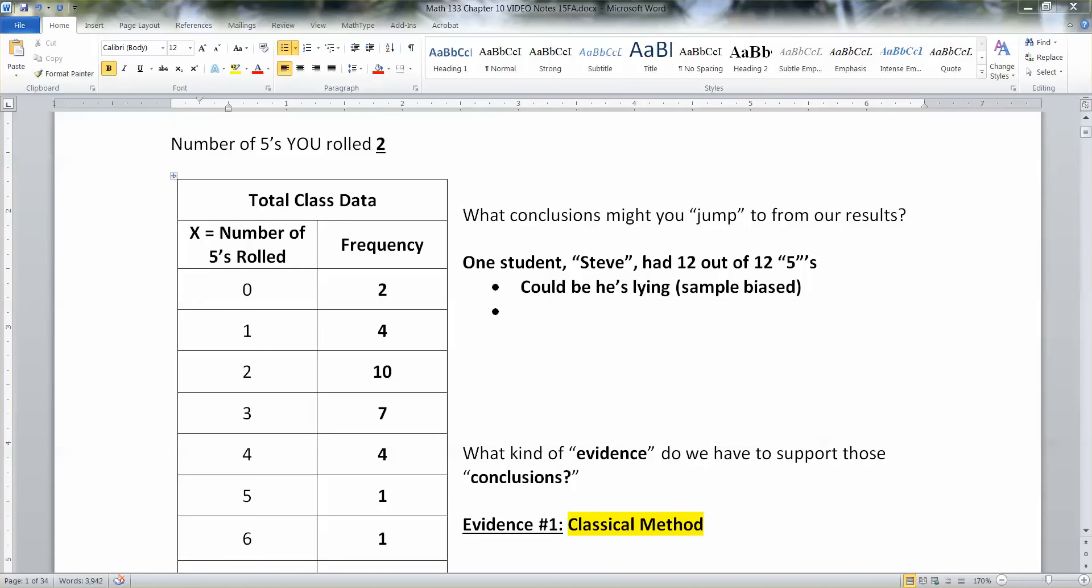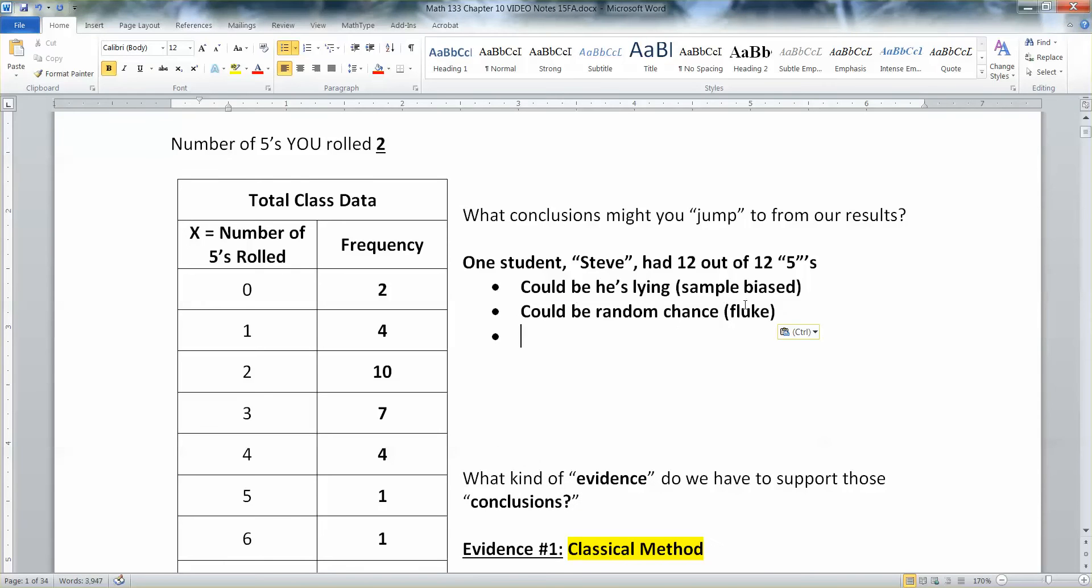It could be just a random fluke. It happens. Rare things do occur upon this. Many casinos are built. So it could just be a random chance, he just happened to get 12 fives in a row with nothing else. And so in your head, hopefully you're thinking, well, I don't think so. I don't think so either.